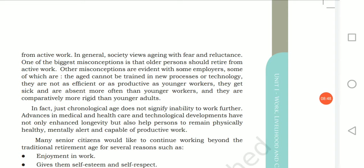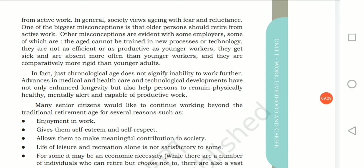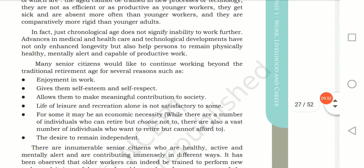Society views aging with fear and reluctance — people fear that once they grow old, they will lose their job and depend on others. The biggest misconception is that older persons should retire from active work. Some employers also believe that the aged cannot be trained in new processes, that they get sick more often, are frequently absent, and are comparatively more rigid. But in fact, chronological age does not signify inability to work further or affect physically healthy, mentally alert individuals capable of productive work.